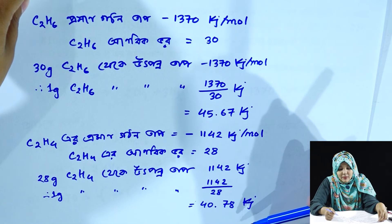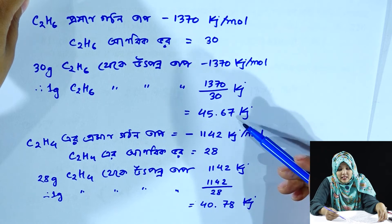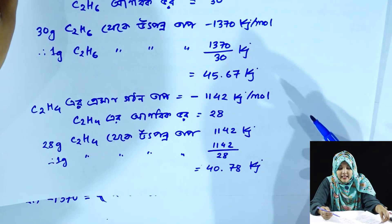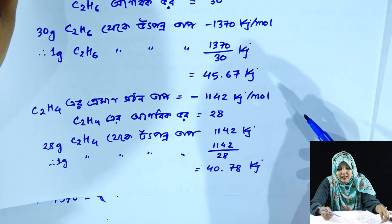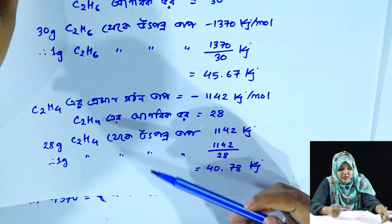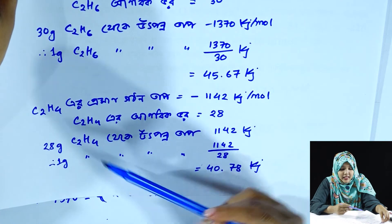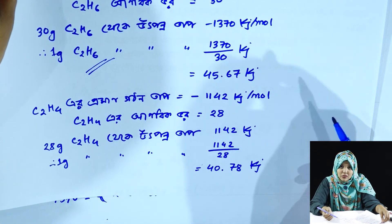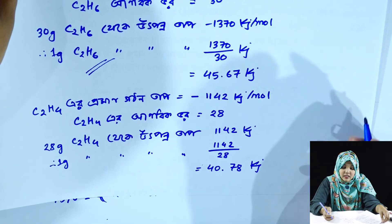আমার দেখে পাচ্ছি এথেন থেকে উৎপন্ন তাপের পরিমান কিন্তু বেশি — তাই আমরা বলতে পারি এথেন এবং এথাইন কিন্তু উৎকৃষ্ট। ধন্যবাদ — ভিডিও টি দেখার জন্য।